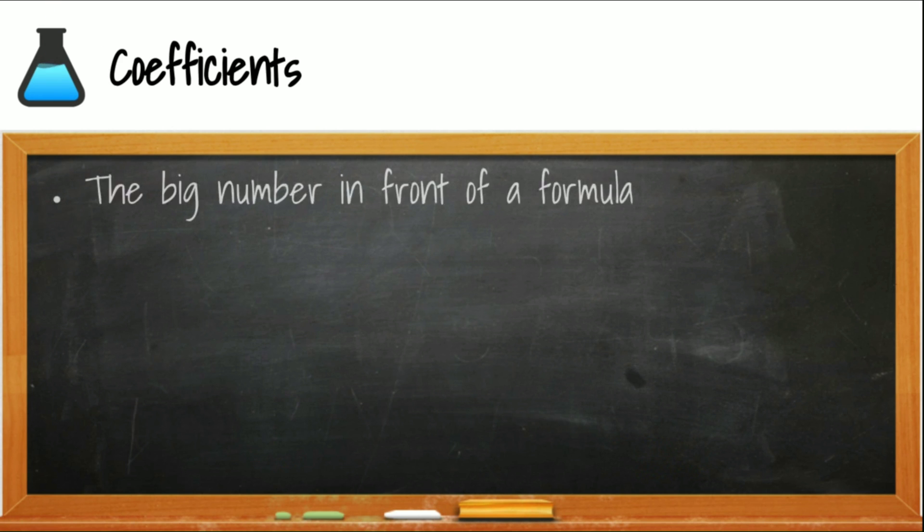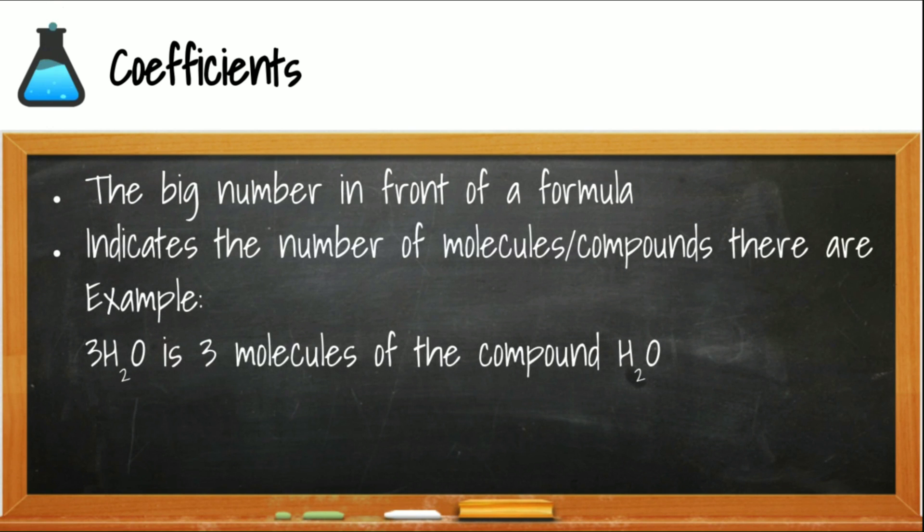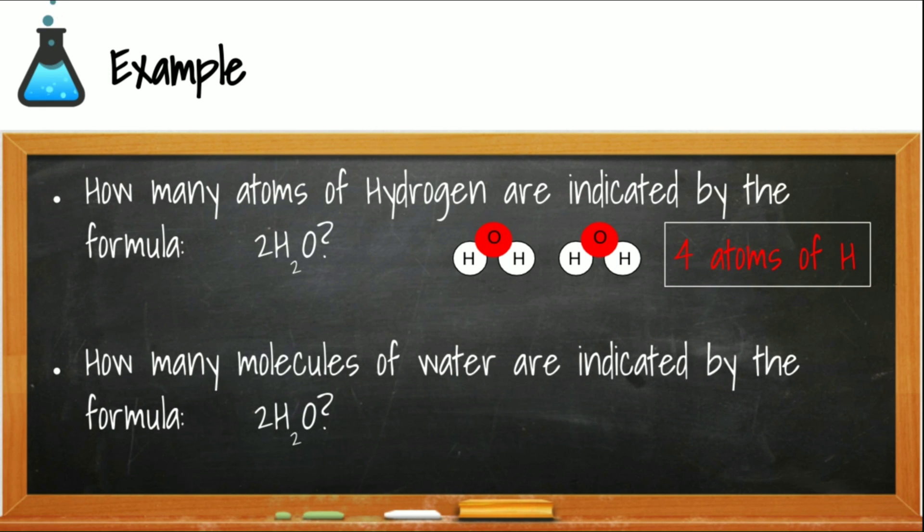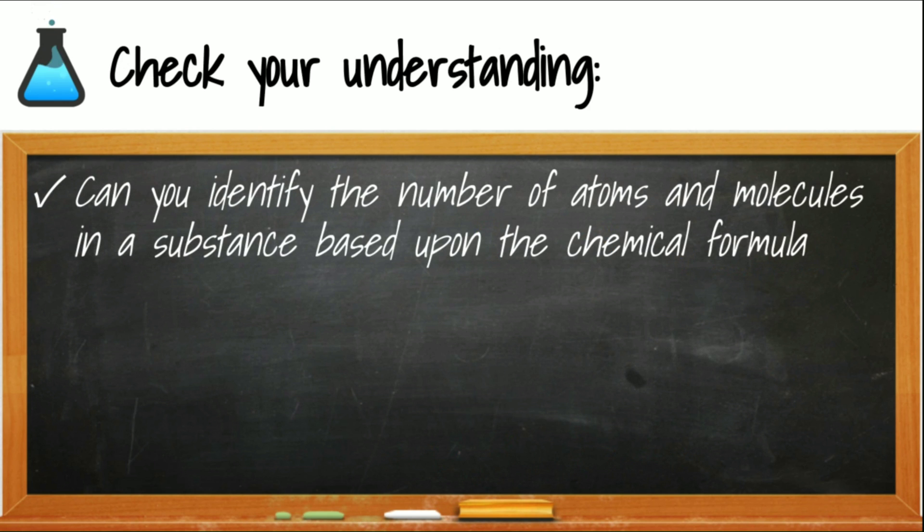Sometimes we can have a larger number called a coefficient, and it comes in front of the formula. That tells us the number of molecules or compound units that are in a formula. We have 3 molecules of water. If we distribute the 3 through, then we're actually going to have 6 hydrogens and 3 oxygens in 3 water molecules. What does it mean if we have 2 water molecules? If we draw out 2 water molecules, we will actually have 4 hydrogens and 2 oxygens. Now, you should be able to identify the number of atoms and molecules in a substance based upon its chemical formula.